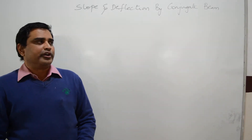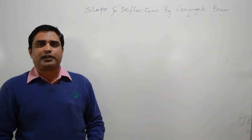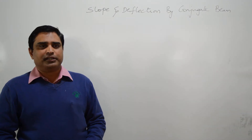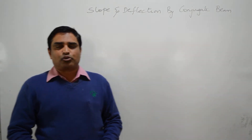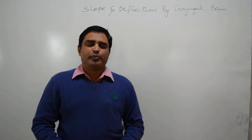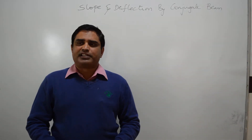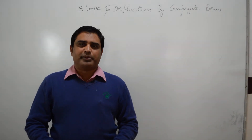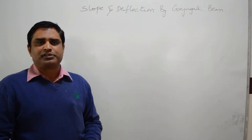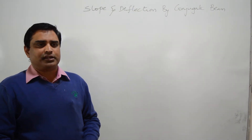Good morning to everyone. Today we are going to discuss slope and deflection by the conjugate beam method. The conjugate beam method is a modified method of the moment-area theorem. The advantage of the conjugate beam method is that we can calculate slope and deflection for beams with varying flexural rigidity.